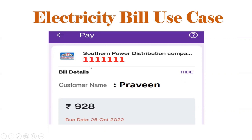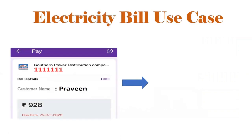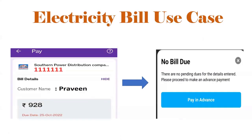Let's discuss the requirement one more time. We need to pass the USN number; if you pass the USN number we need to get the following details: what is the customer name, what is the bill amount, and what is the due date. Also, suppose if the bill is already paid, we need to display 'No Bill Due'.